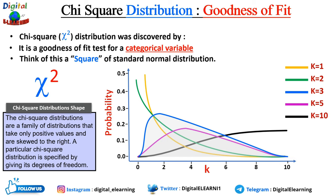The degree of skewness decreases as the degree of freedom increases. As the degree of freedom increases, the chi-square distribution approaches a normal distribution. For example, if k goes beyond 10, 50, or 100, the distribution looks increasingly similar to a normal distribution. When k reaches 90 or 100 or greater, a normal distribution is a good approximation of the chi-square distribution.